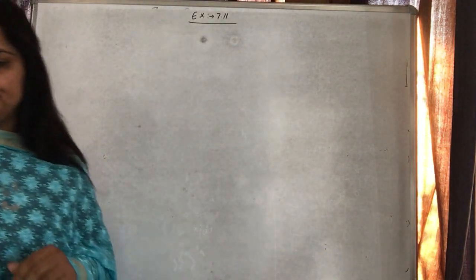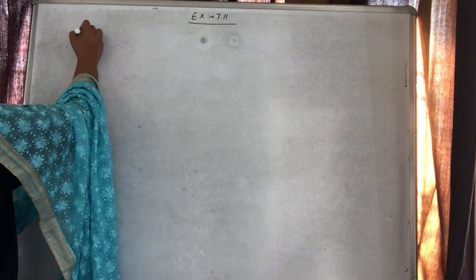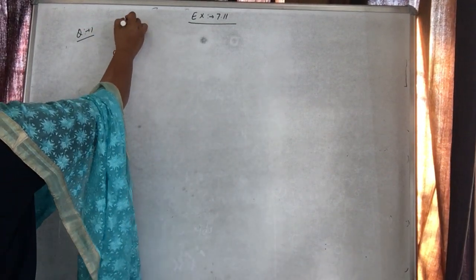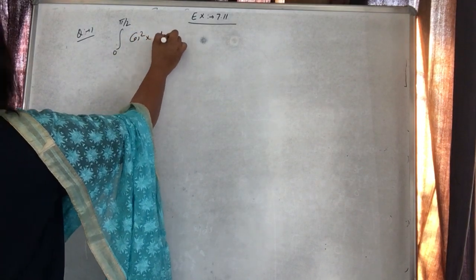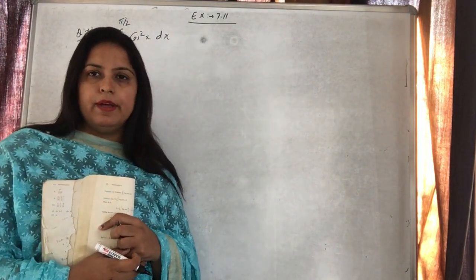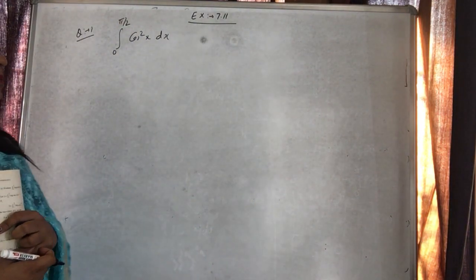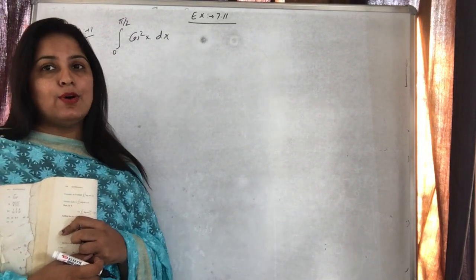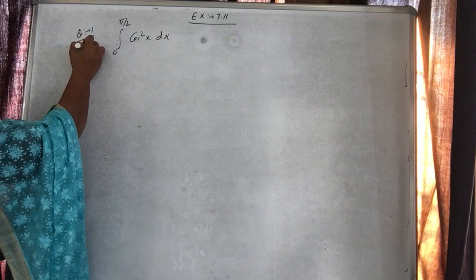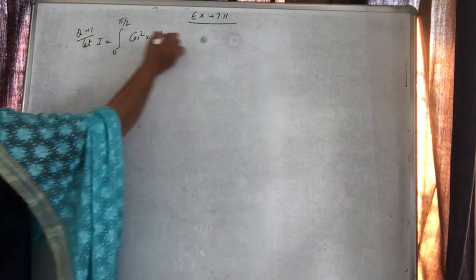Exercise 7.11 ka first question: integral 0 to 90 (0 to π/2), cos square x dx. Yeh function given hai. Ab is question ko humne already pehle bhi solve kiya hua hai — ki agar cos square x ka integration aaye toh hum usse 1 plus cos 2x by 2 likhte the, aur separate karke integrate karte the. Lekin ab usne kaha by using properties of integral. Toh let the given function be equal to I.